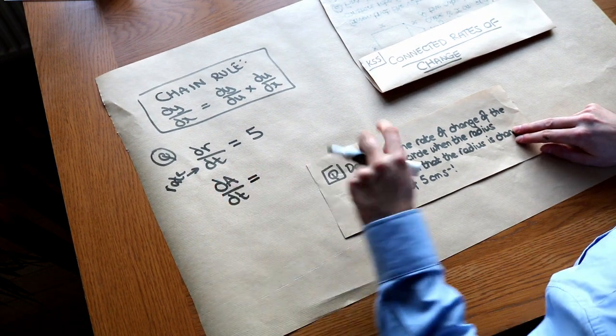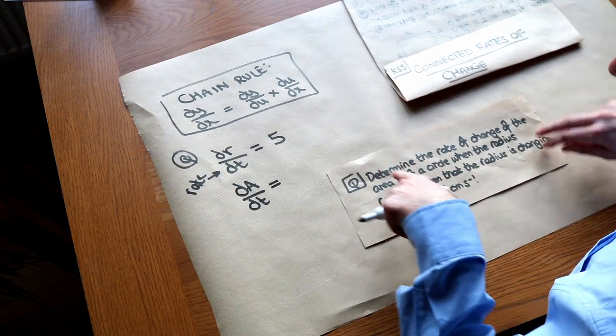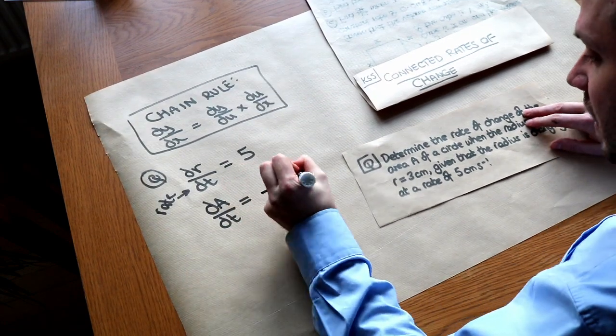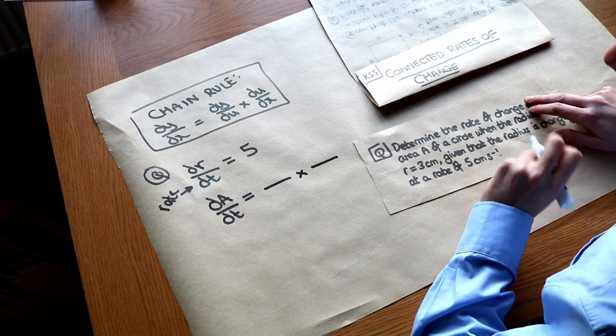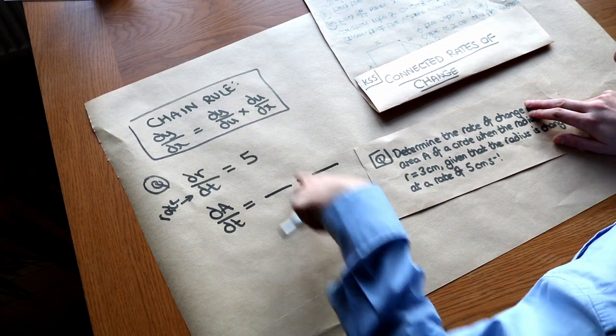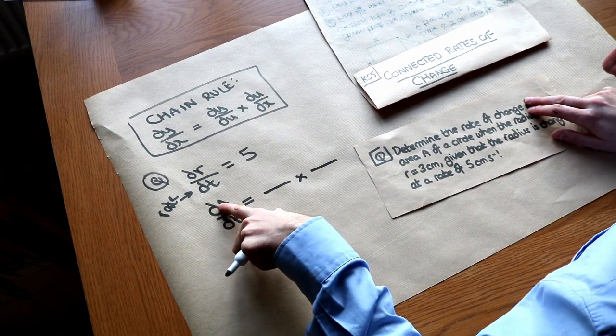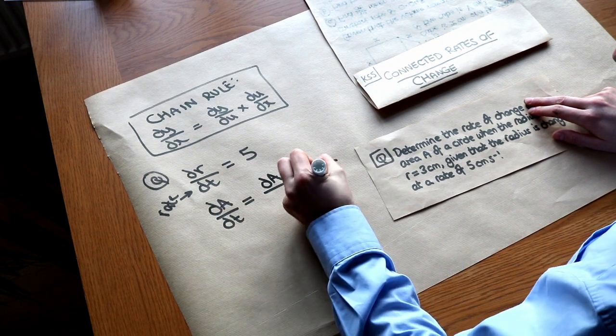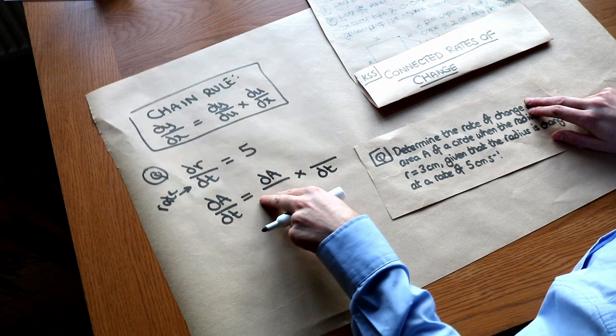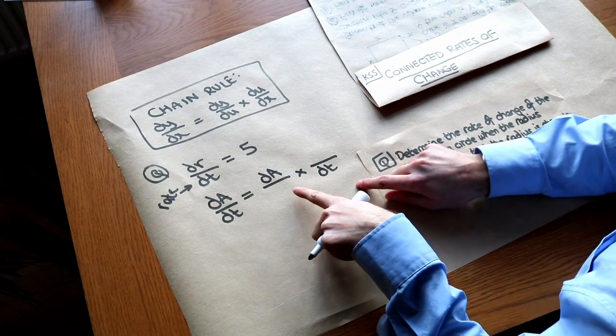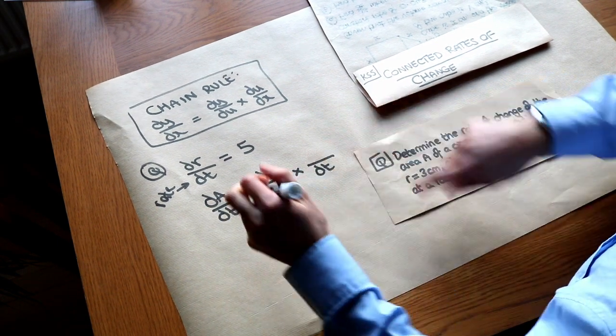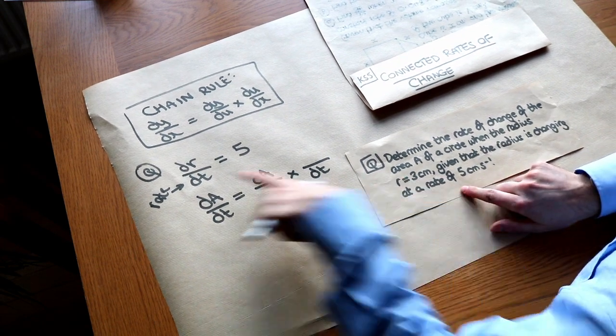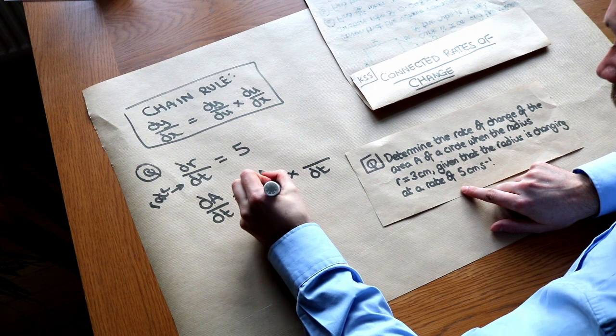How do we find dA over dt? Well this is where we can use the chain rule. The way I do it is I write out two empty fractions times together to mimic this. I copy that dA into here and I copy that dt into here. If we think of these just as normal fractions, we'll have the dA here and the dt here. These two things have got to cancel, so that's where we involve our other variable. Our only other variable in this problem is R, the dr.